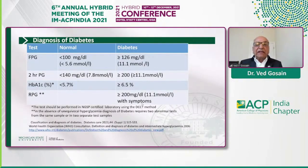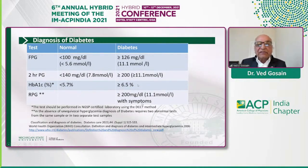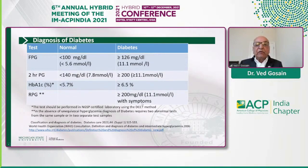These are the criteria we currently use for making a diagnosis of diabetes — they are well-established. Two key points: if you're going to use hemoglobin A1C for making a diagnosis of diabetes, the test must be done in a standardized certified laboratory. And in the absence of unequivocal hyperglycemia, diagnosis requires two abnormal tests from the same sample or two different samples.